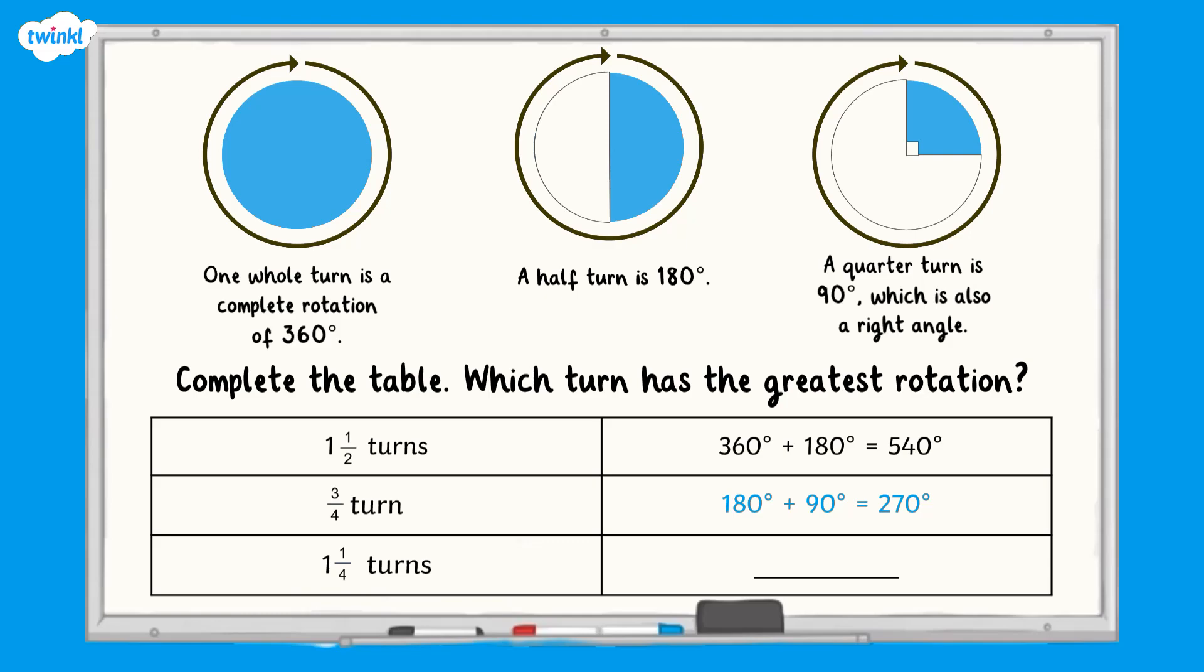One and a quarter turn is equal to a full rotation, which is 360 degrees, and a quarter turn, which is equal to 90 degrees. When added together, these equal 450 degrees. One and a quarter turns is therefore equal to 450 degrees. Therefore, the turn with the greatest rotation is one and a half turns.